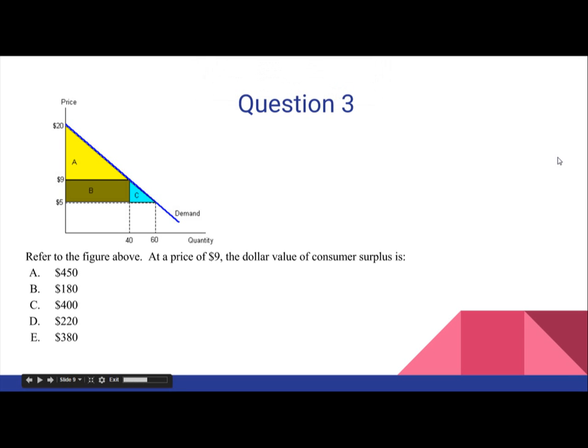Question 3. Refer to the figure above. At a price of $9, the dollar value of consumer surplus is: a. $450, b. $180, c. $400, d. $220, e. $380.